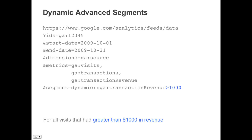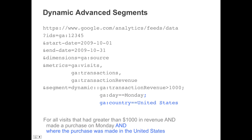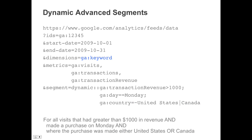We can easily change that to visits with greater than a thousand dollars in revenue. The segment parameter supports the same operators as the filters parameter. Here, we've narrowed the scope of our original segment to only transactions that occurred on Monday. And here, we've further narrowed the scope to purchases in the United States. We can even change the operator to use a regular expression to say either United States or Canada. But what's really powerful is we can take this segment and apply it to other dimensions like keyword, or keyword and medium, to differentiate between paid and organic terms. We can even change the metrics to entrances, bounces, and goal completions. The expressive syntax of dynamic segments makes them very powerful.